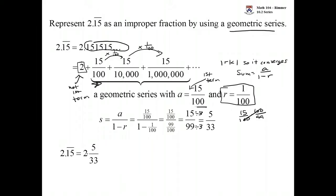So we're looking at 2 and 5 over 33. That's what this number is, 2.15 repeating.